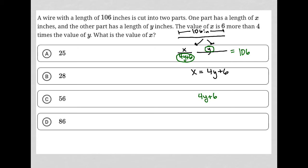4Y plus 6, which represents one piece - the X piece specifically - plus Y, which represents the second piece that this wire was cut into, equals the total length of the wire, which is 106.